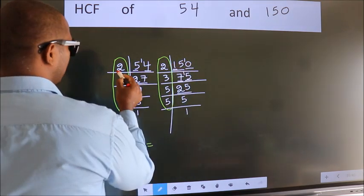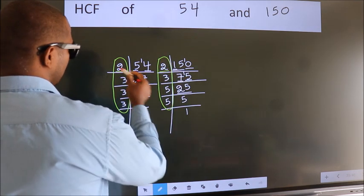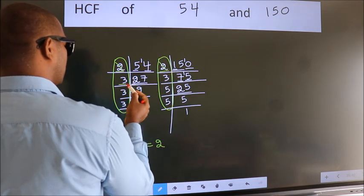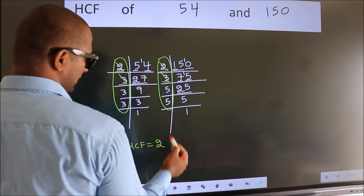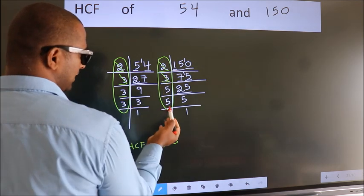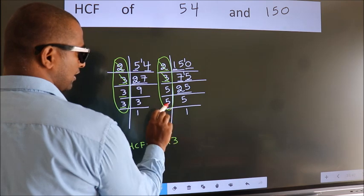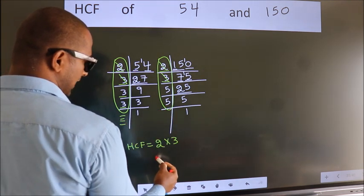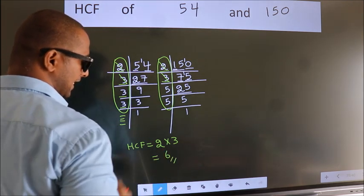Starting with the number 2. Do we have 2 here? Yes. So cut 2 right here. Next number 3. Do we have 3 here? No. Next number 3. Do we have 3 here? No. No more numbers have been left out. So our HCF is 2 into 3. 6 is our HCF.